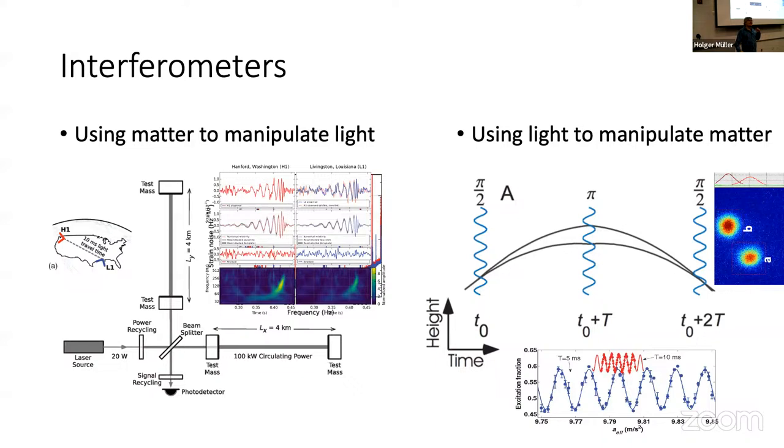So what we do instead is we send in two laser beams. The first one stimulates the atom to go into an excited state, kicking it up in the process. The second one comes in from the top, stimulates the atom immediately to emit a photon downwards, kicking it up a second time. And now the atom is back in the ground state, which doesn't decay. And that's a first measure to keep the quantum state alive in this experiment. After time of flight big T, we fire the laser again, this time to kick the upper arm down and the lower arm up, so that they meet again after another waiting time T, and then they interfere.